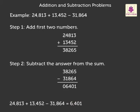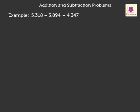Now, let us look at another example: 5,318 minus 3,894 plus 4,347. Here, we have to subtract first and then add.